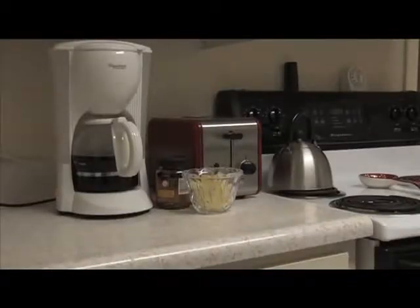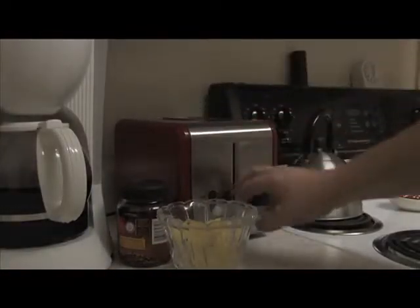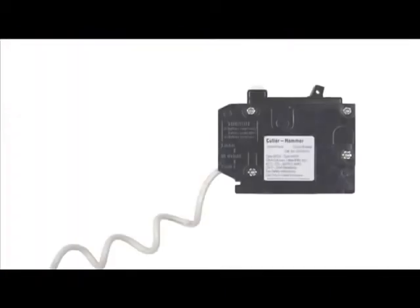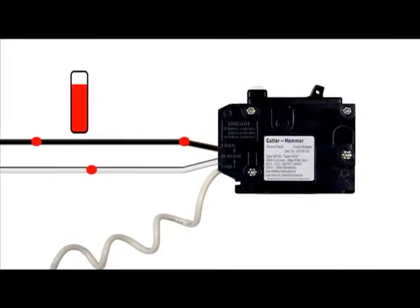A ground fault occurs when the current leaks from the hot wire to a grounded path. These leaks, if left undetected, can lead to equipment damage or cause harm to anything or anyone it comes into contact with. The GFCI breaker measures the amount of current leaving on the hot wire and compares it to the current returning on the neutral wire. If there's any difference, it assumes the missing current has leaked onto the ground wire and trips the circuit.